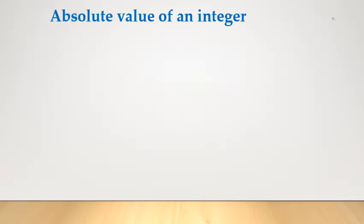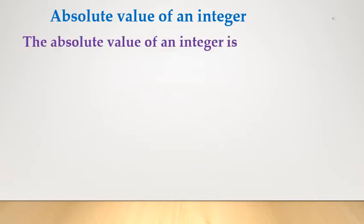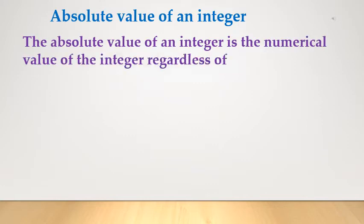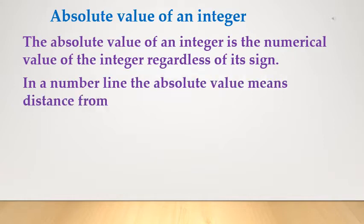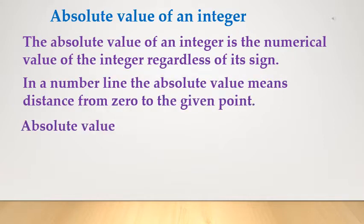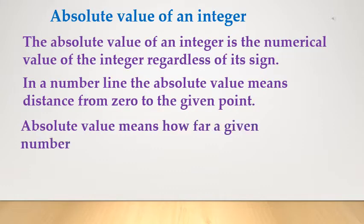Absolute value of an integer. The absolute value of an integer is the numerical value of the integer regardless of its sign. On a number line, the absolute value means the distance from 0 to the given point — how far a given number is from 0. Distance is always positive or 0.